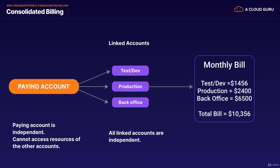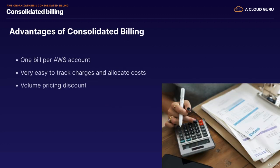So if you look at S3 storage, for example, the more storage you use, the less you pay — it comes down in price. When you use consolidated billing with AWS Organizations, it takes into account the aggregate of all of your accounts. So the more you use in S3 across the entire organization, the less that you pay. Typically, we'll have a paying account that is independent and we would want it not to be able to access resources of the other accounts. Then we have our linked accounts — test and dev, production, back office — all independent. You add up the costs of all these different accounts, and your bill will be just over $10,000, but you're getting the best price possible because you're consolidating your bill under one bill. The advantages of consolidated billing: it's one bill per AWS account, it's very easy to track charges and allocate costs, and you get volume pricing discounts.